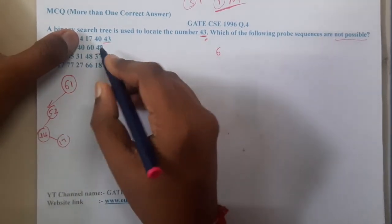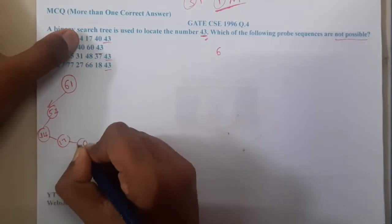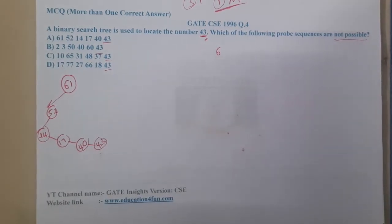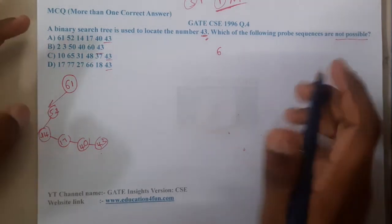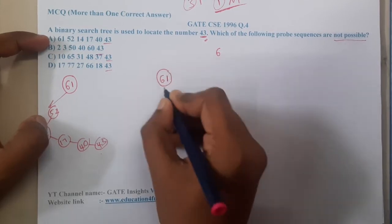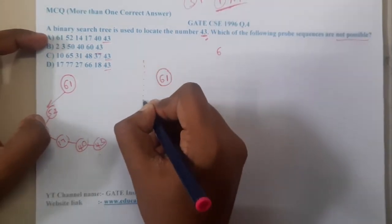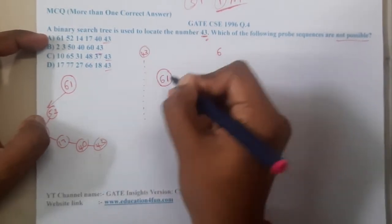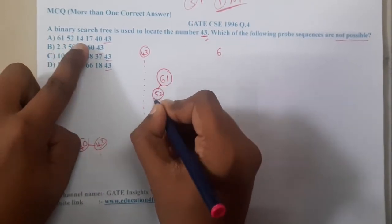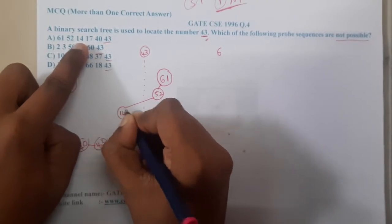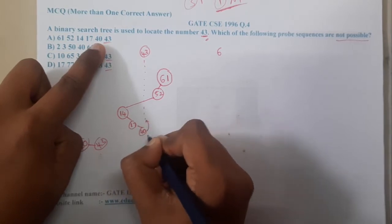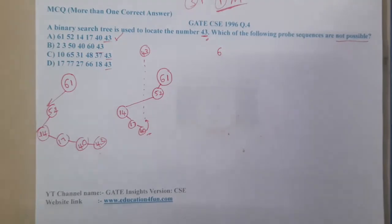After 14 you went to 17, and after 17 you went to 40, and after 40 you found 43. I don't see any error or issue here. A simple trick to solve these kinds of questions is to draw a diagram. Draw 61 first — you are searching for 43 so you are on the left side. Next value is 52, then 14 going left, then 17, then 40, and finally you found 43. This sequence is absolutely correct.